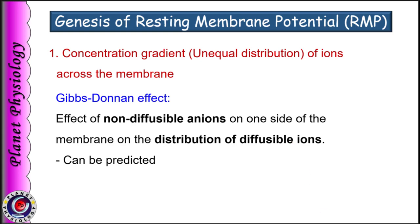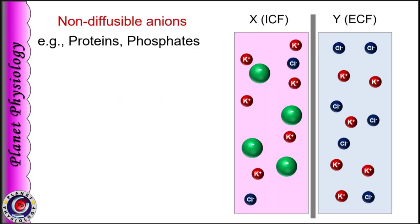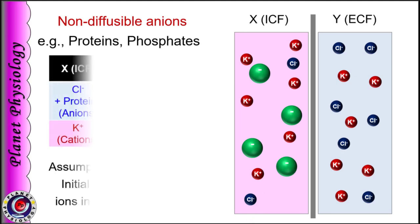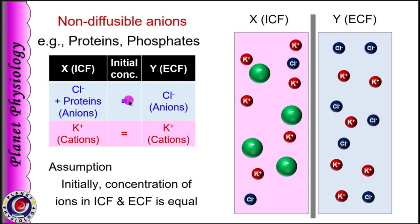And this ion distribution happens in a predictable way. Let's understand with an example. Compartment X is similar to intracellular fluid and compartment Y represents extracellular fluid. Both compartments are separated by cell membrane. Intracellular fluid contains some non-diffusible anions like proteins and phosphate, shown in green circles. Let us assume that initially the concentration of anions and cations on both sides are equal — that means concentration of chlorides and proteins together, both being anions, is the same in compartment X as well as Y.